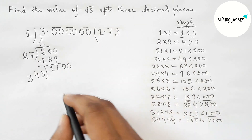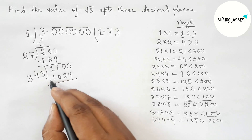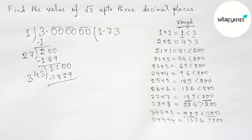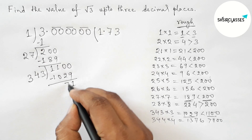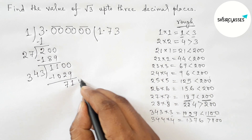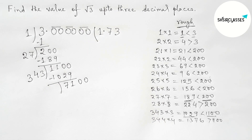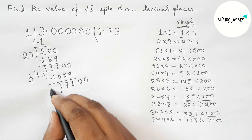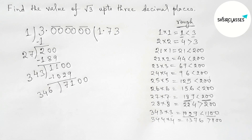Subtracting gives remainder 17. Write down the third pair of zeros and draw the division line. By similar way, taking double of 3 gives 6, and 34 stays the same, so we have 346. Next, take a number beside 346.